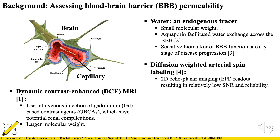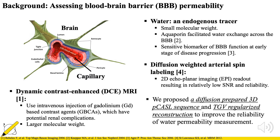Our group previously proposed using diffusion-weighted arterial spin labeling to measure water permeability non-invasively. However, SNR and reliability were low due to the 2D EPI readout. So in this paper, we propose a new sequence and a new reconstruction algorithm to improve the reliability of water permeability measurement.